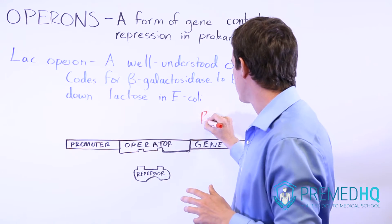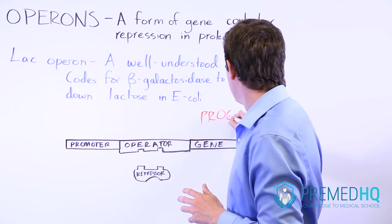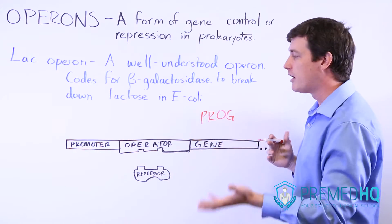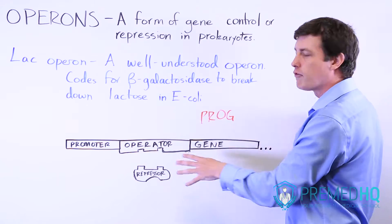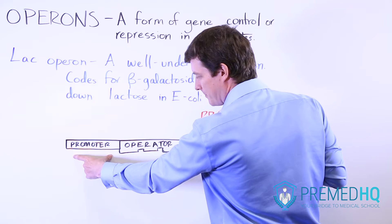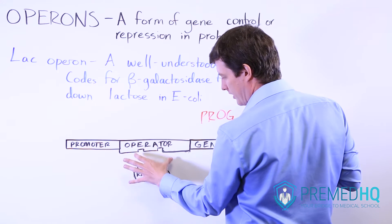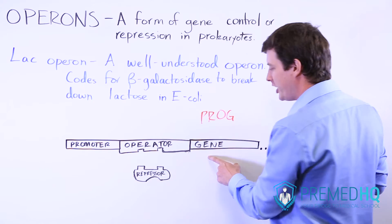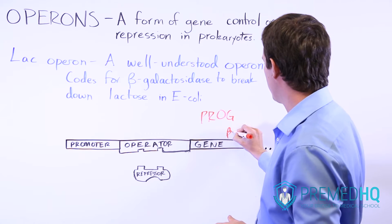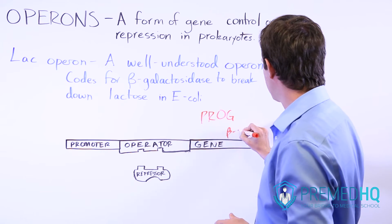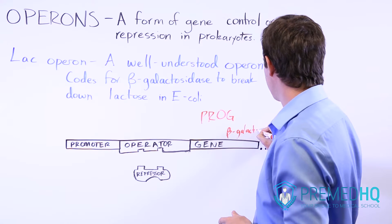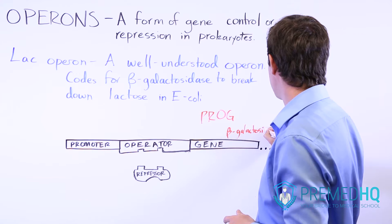The LAC operon has a structure described as PROG — P-R-O-G. There are four parts to the LAC operon: the promoter region, the repressor, the operator, and the gene. In this case, the gene encodes the transcript that will ultimately produce the protein enzyme beta-galactosidase.